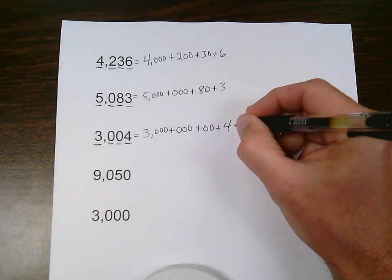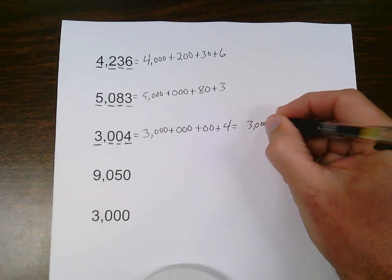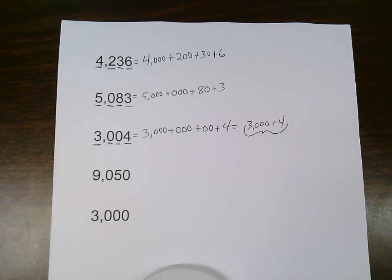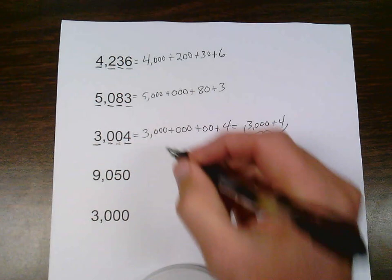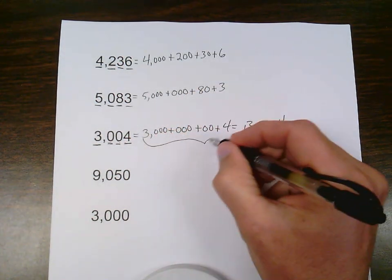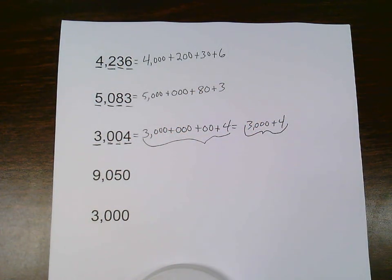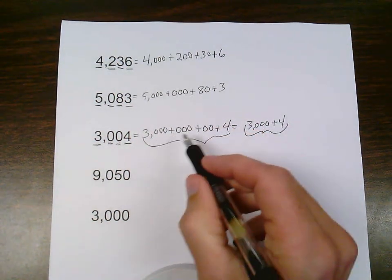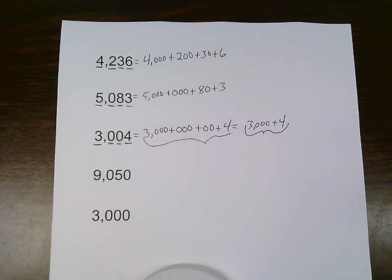Now, if you really wanted to, you could do 3,000 plus 4. And that would be the correct answer. However, I don't have my pattern there anymore, and it opens me up to the possibility of making mistakes. So I like to always make sure that I follow the 4, 3, 2, 1 pattern for every single 4 digit problem that I start with.